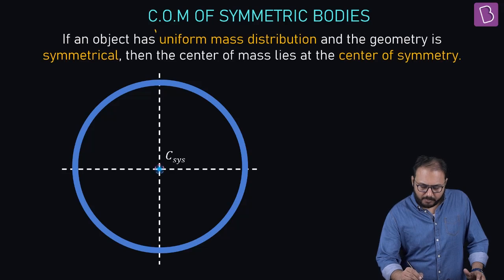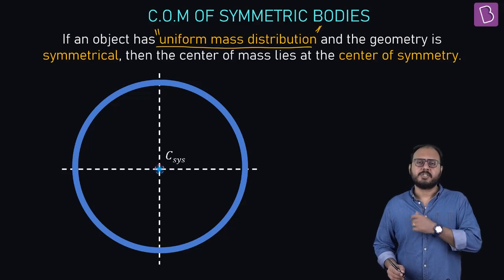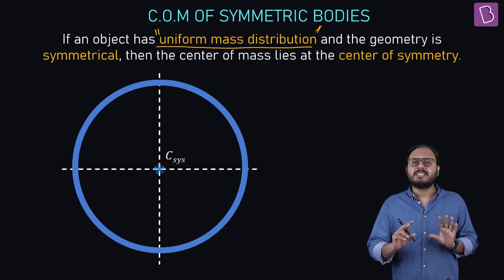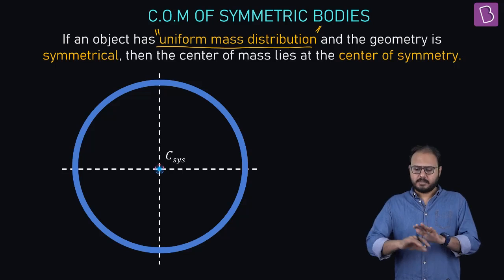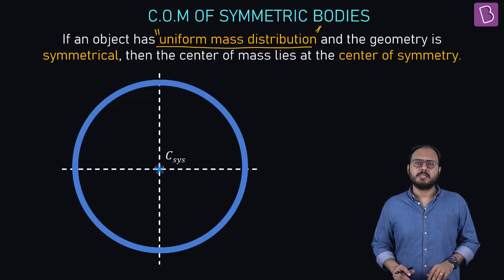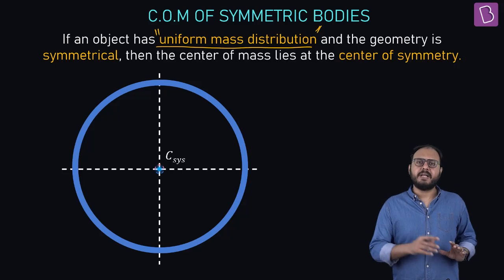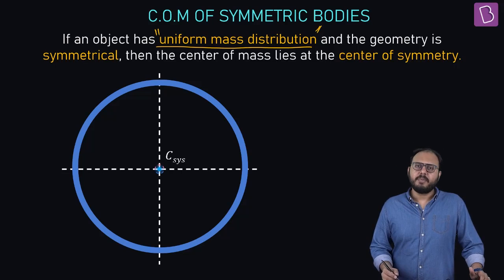Uniform mass distribution means it should be made up of absolute same material and same density. In other words, if I divide that into equal parts, the masses should also become two equal parts. If I divide the thing into 10 equal parts, each mass should be m by 10, m by 10, m by 10. That's what uniformity means. Okay?